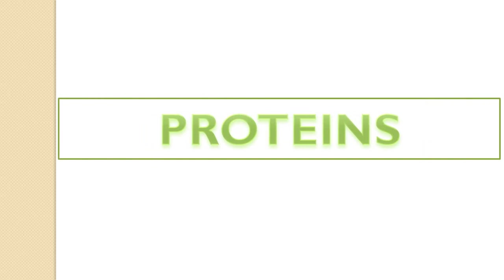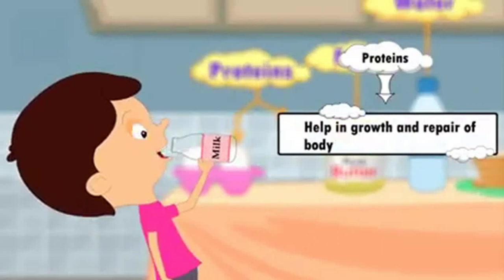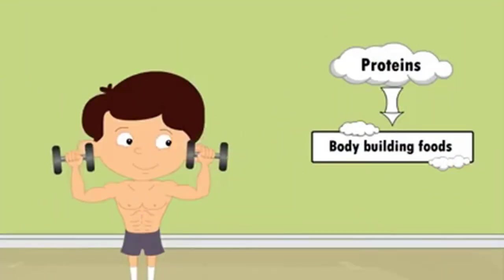The next nutrient we will study is proteins. Milk, eggs, pulses, cheese and meat are the resources of protein. Protein helps in the growth and repair of the body. Since children's bodies are still growing, they need more proteins than adults. A lack of protein in children's diet may cause a disease called Kwashiorkor. That is why proteins are also known as body building food.